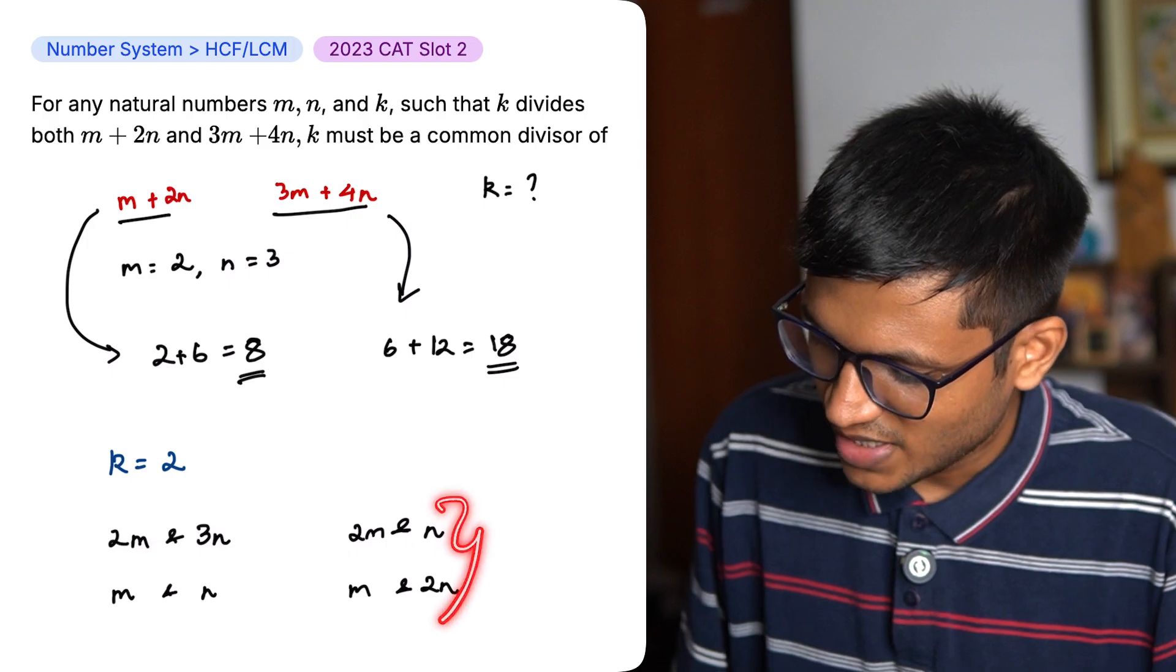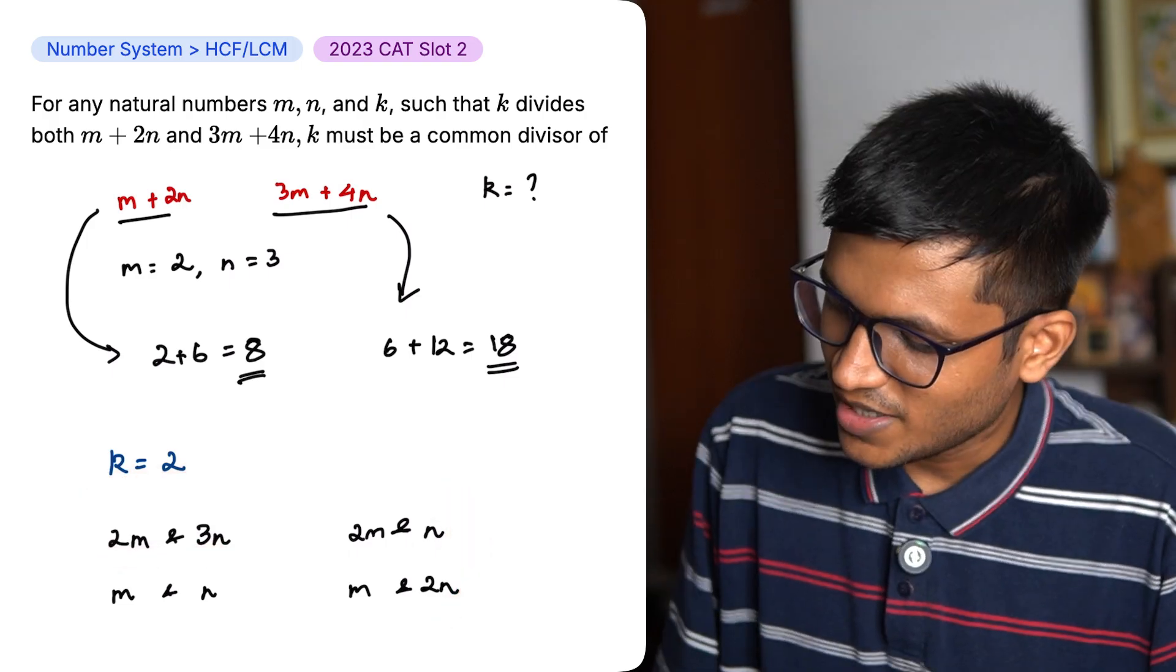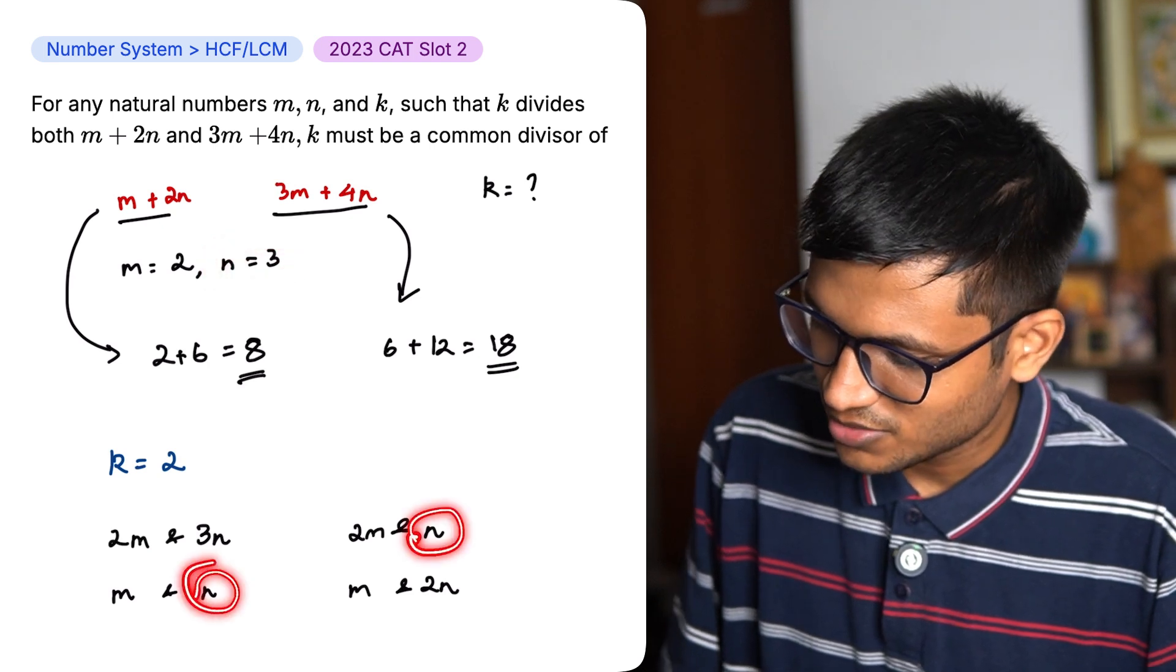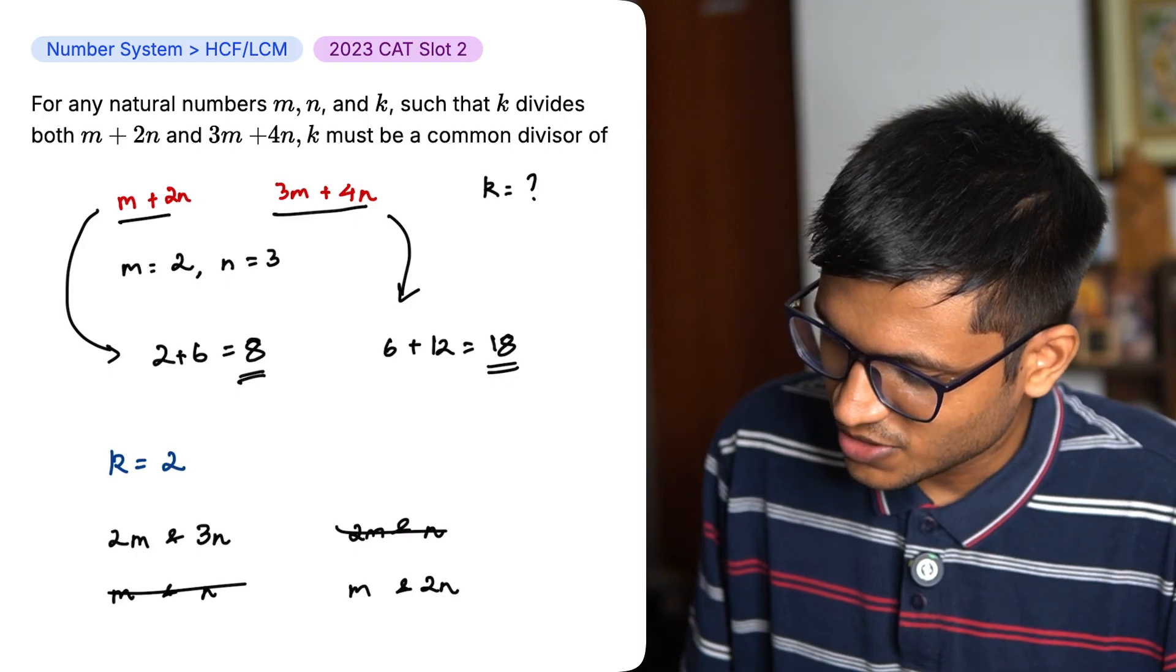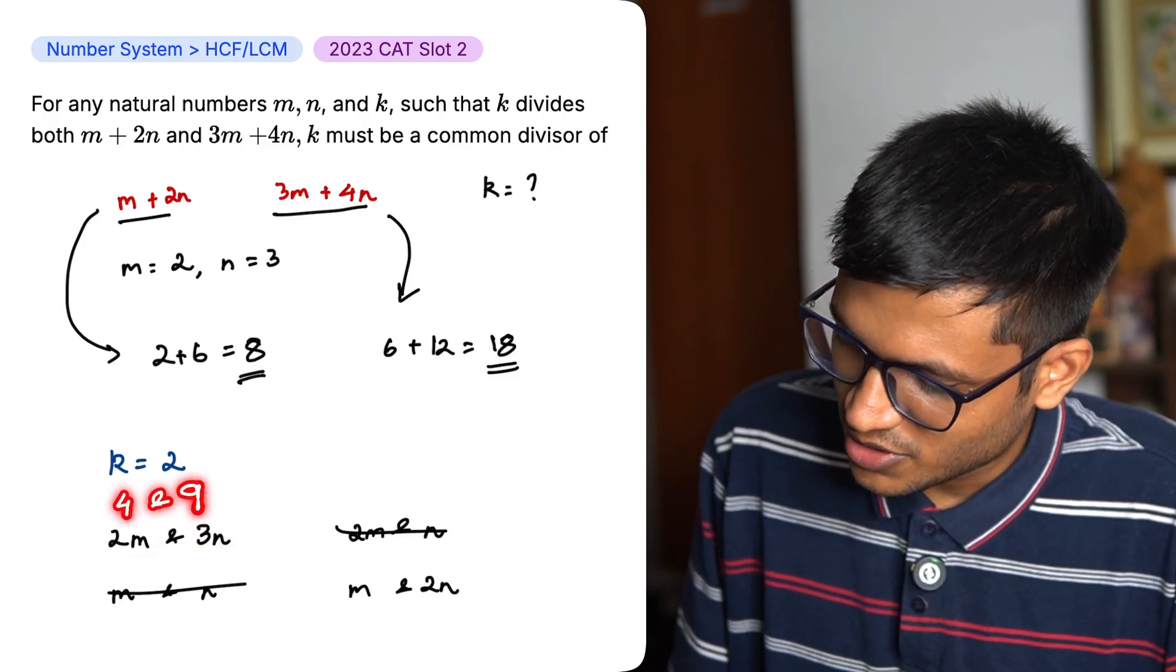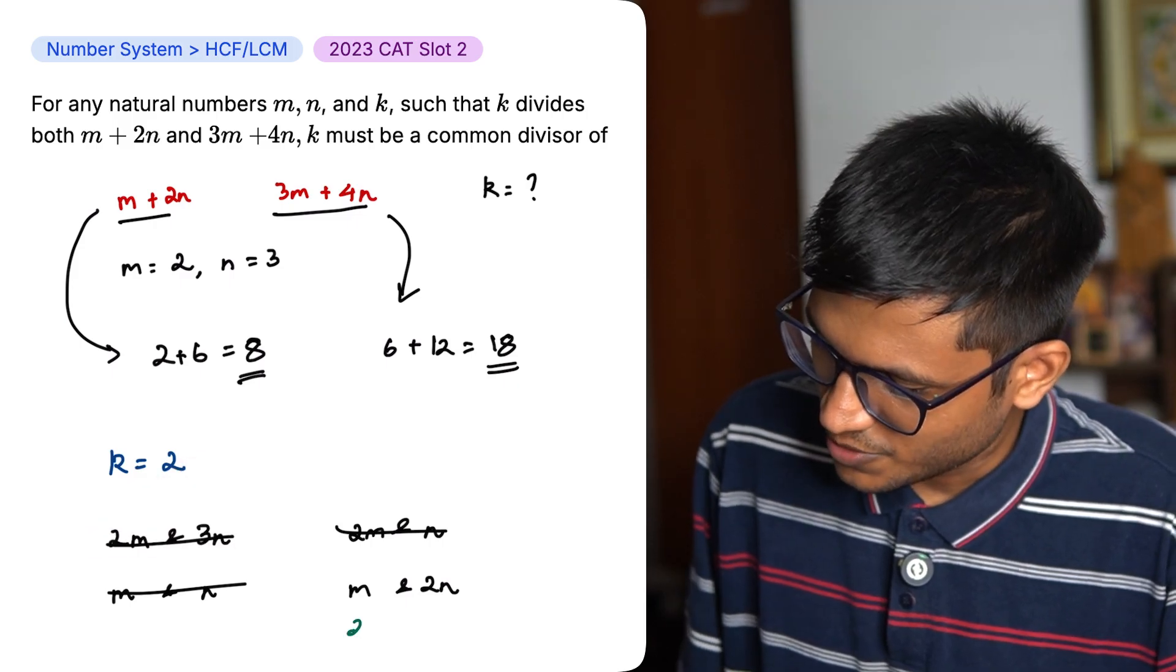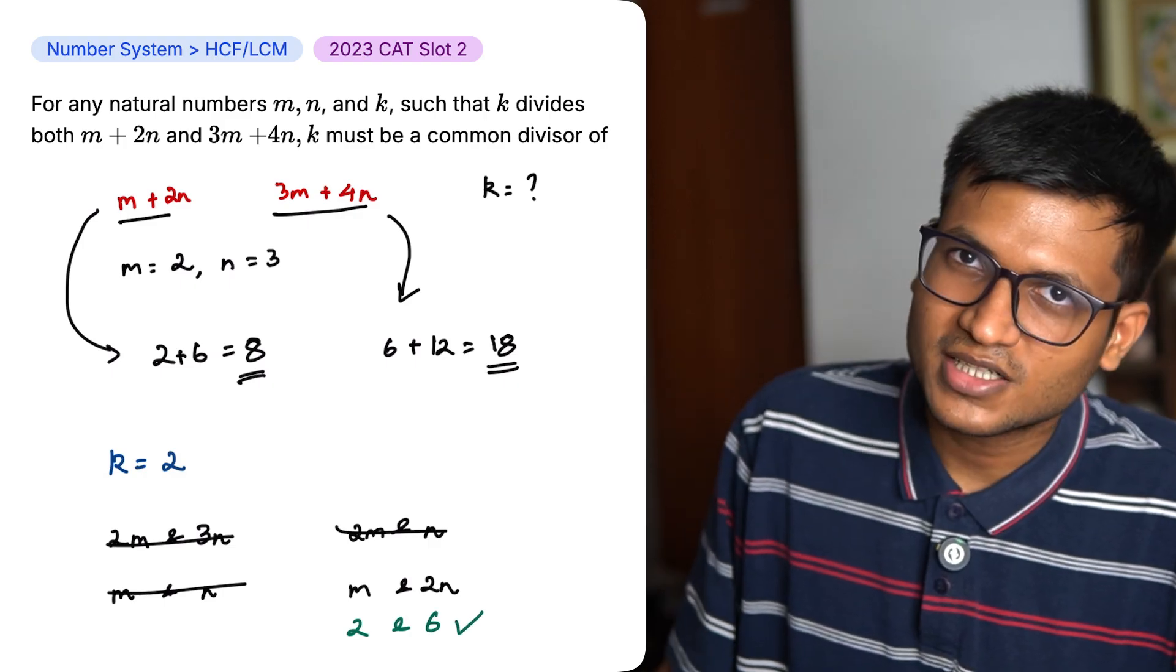We have these options and k divides both the terms in each option. We know that n equal to 3. So if I have this as 3, k cannot divide it. So these two options can be put in the trash. Looking at option 1, 2m gives us 4 and 3n gives us 9. k cannot divide 9. So this is also eliminated. So we have m equal to 2 and 2n equal to 6 and k can divide it. Hence our correct answer.